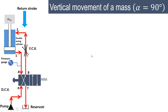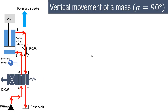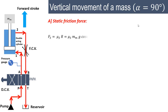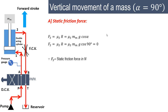An important consideration for designing this circuit is that we have vertical movement of the mass, so alpha equals 90 degrees. Therefore, the static friction force will be zero, because the static friction force is given by mu_s times R, where R is defined as mm·g·cos(alpha). Substituting alpha = 90°, cos(90°) = 0, so there is no static friction force theoretically in this case.